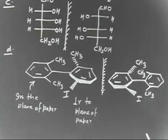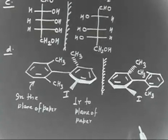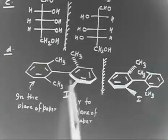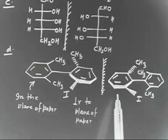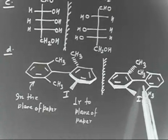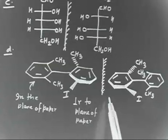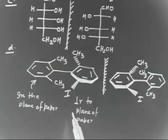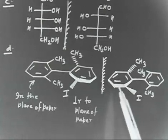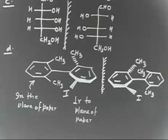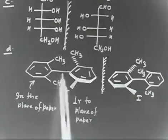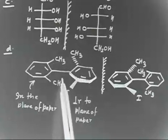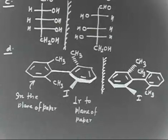This molecule is chiral because of restricted rotation. If you try to superimpose these two structures, you will find they cannot be superimposed. This compound shows enantiomerism due to restricted rotation — rotation about the single bond is not permissible because of the steric groups. That is why this compound is optically active.